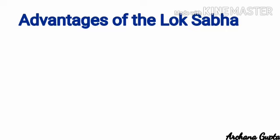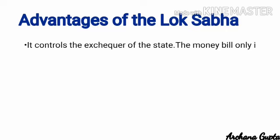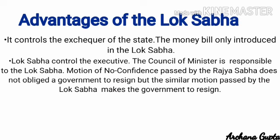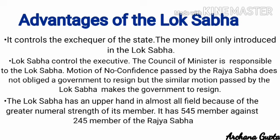Though the Lok Sabha is known as the lower house, it has special advantages. It controls the exchequer of the state, as money bills can be introduced only in the Lok Sabha and not in the Rajya Sabha. The Council of Ministers is actually responsible to the Lok Sabha — a no-confidence motion passed by the Rajya Sabha does not oblige the government to resign, but one passed by the Lok Sabha makes it obligatory for the government to resign. Lok Sabha also has an upper hand in most other fields due to its greater numerical strength of 545 members, as against 245 in the Rajya Sabha.